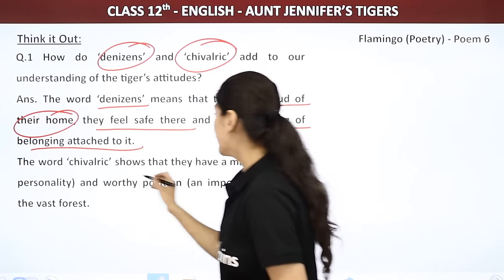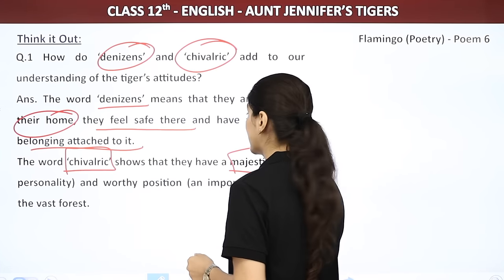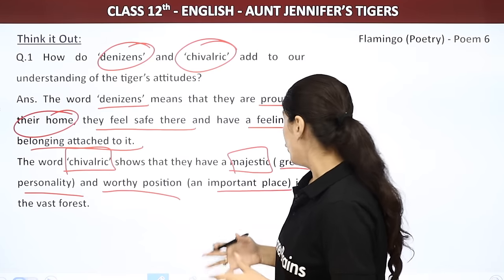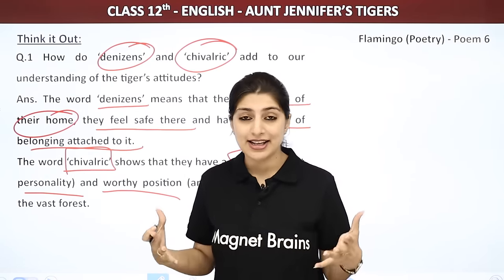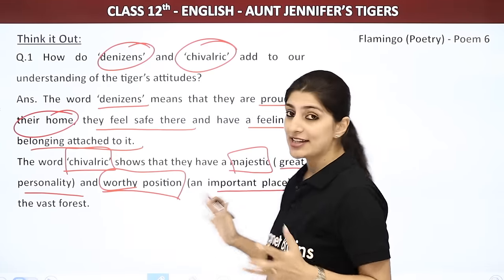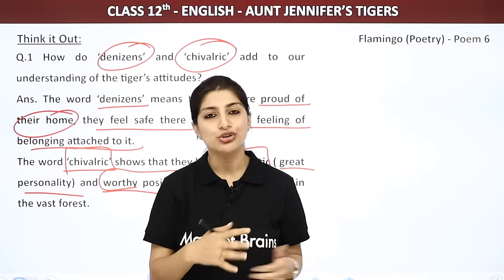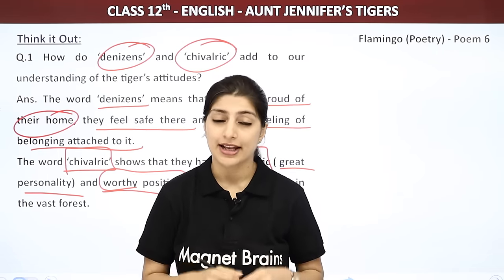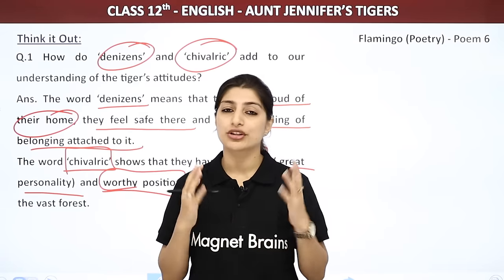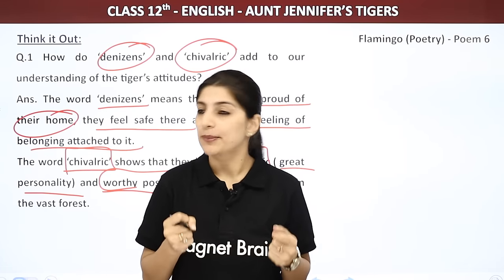The word 'chivalric' shows that tigers have a majestic and worthy position in the vast forest — majestic means great personality, worthy position means an important place. Tiger bahut proudly chalta hai, kisi se darta nahi, aur pore forest mein uski ek important place hai. But jo aunt hai unki personality bilkul bright nahi — poori zindagi itna kaam kiya, unki beauty aur glow khatam ho chuka hai. Ghar mein unki koi worthy position nahi, hamesha husband se dominated rehti hain.